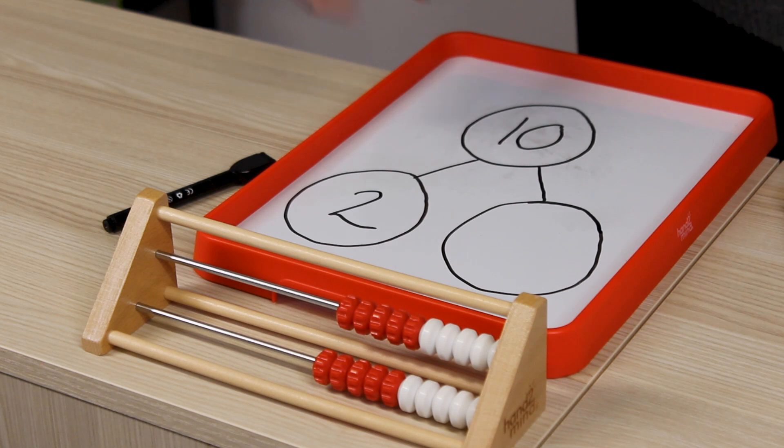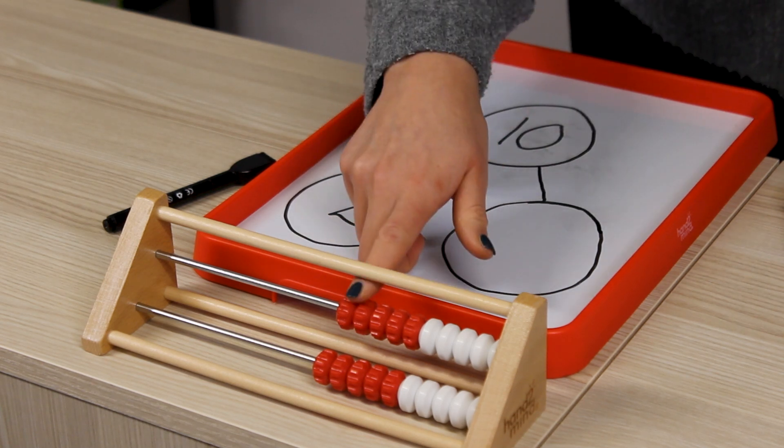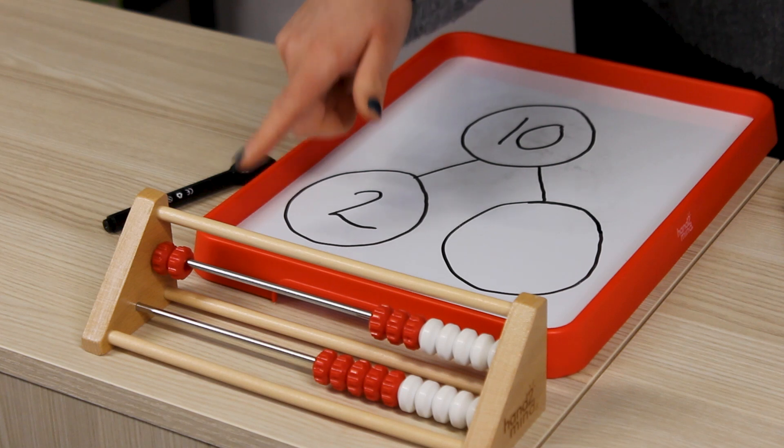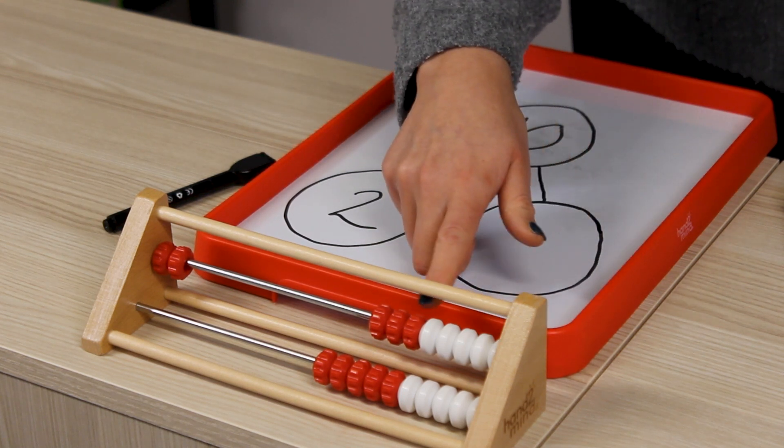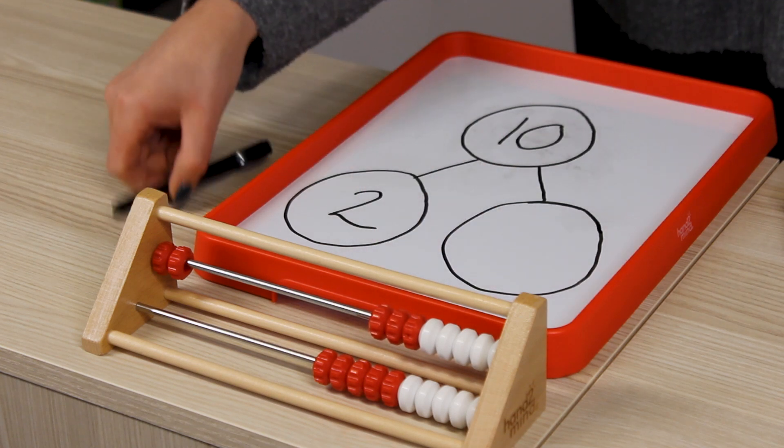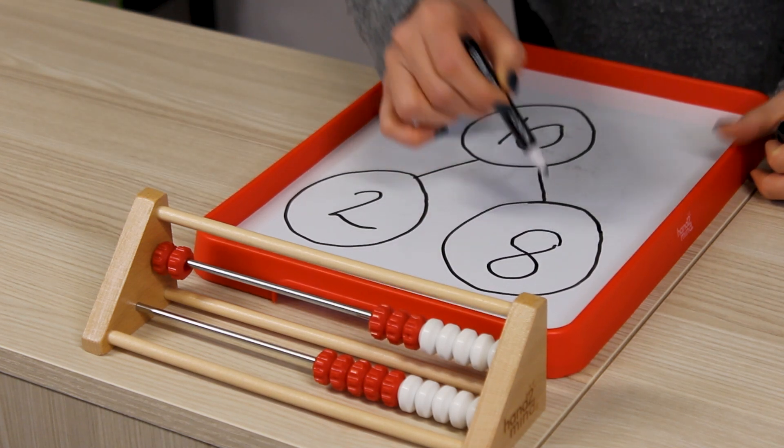So we know we've got our whole of ten, we've got our part and children can physically use the Rekenrek so they can move across their two and then find out how many more it is to make their ten. So they can see they've got five, six, seven, eight. So our missing part is eight.